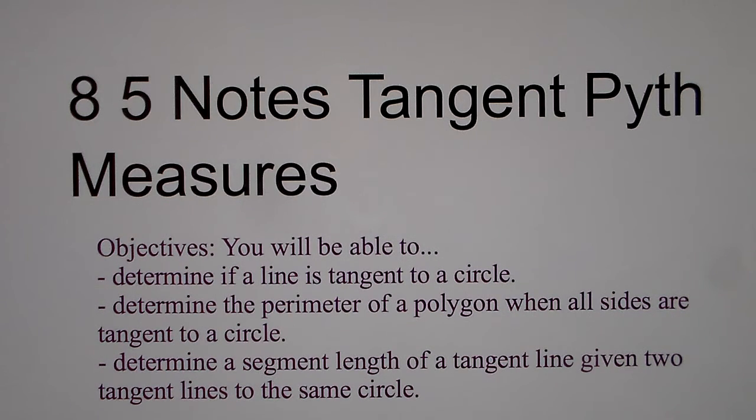Alright ladies and gentlemen, this is 8-5 notes tangent Pythagorean measures. Objectives: we'll be able to determine if a line is tangent to a circle, determine the perimeter of a polygon when all sides are tangent to a circle, and determine the segment length of a tangent line given two tangent lines to the same circle.